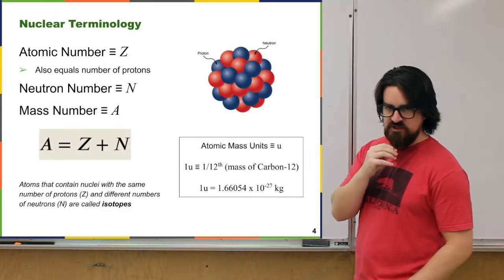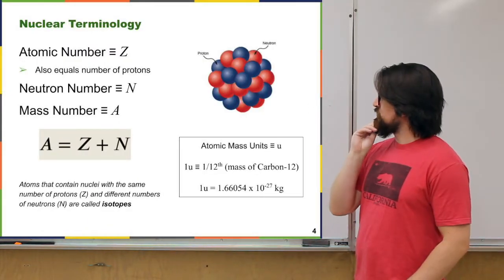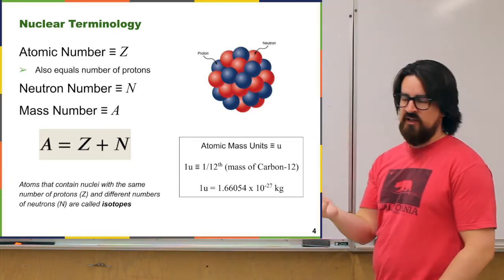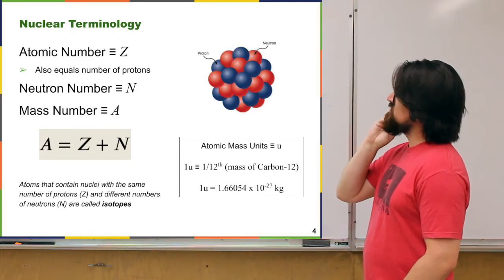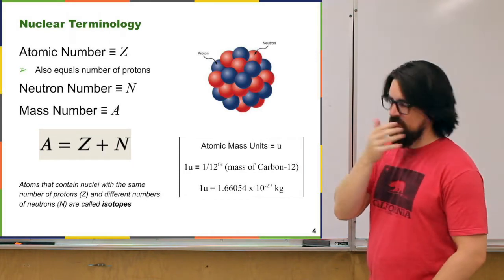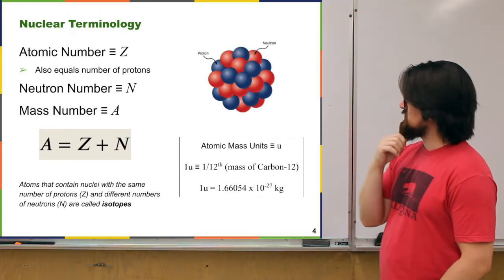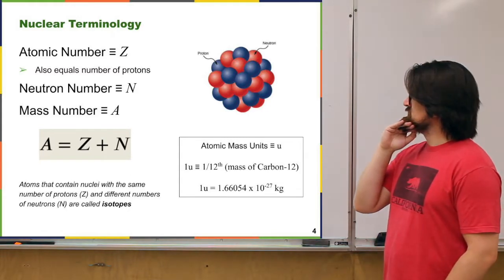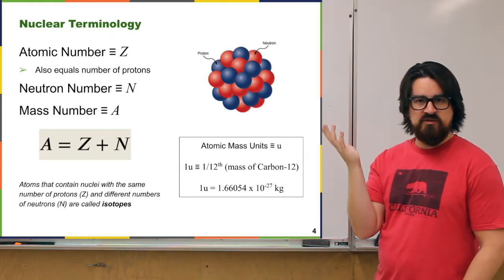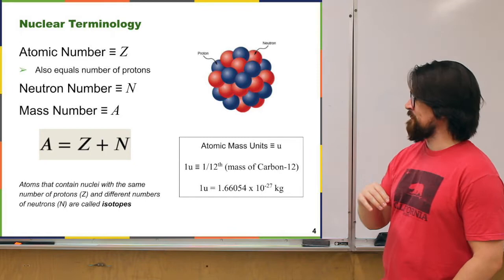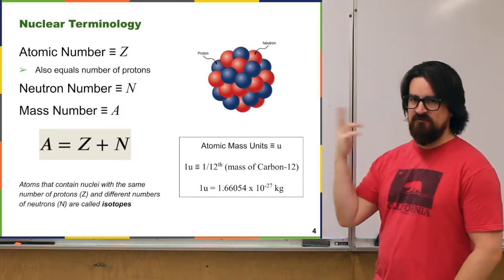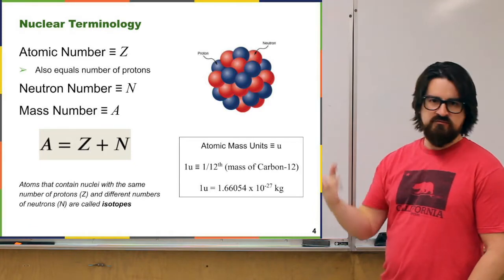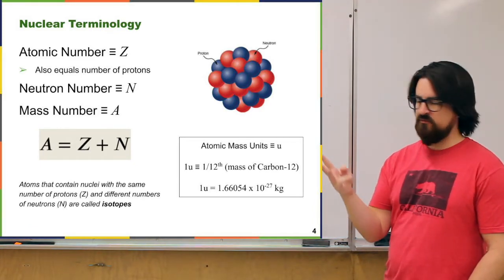We need some terminology. When we classify nuclei, we use a couple of different measures. The atomic number, written as Z, is how many protons are in the nucleus. The atomic number essentially defines the element — Z equals 1 is hydrogen, 2 is helium, 3 is lithium, and so on.